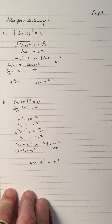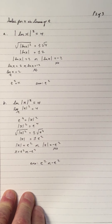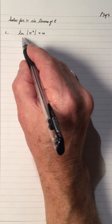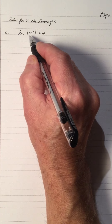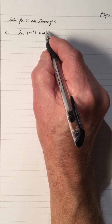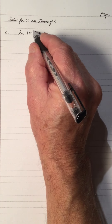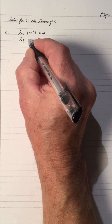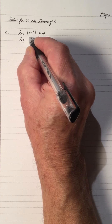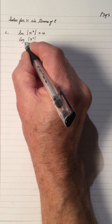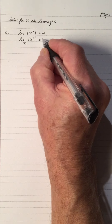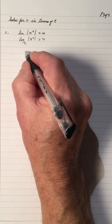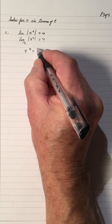Again, the equation is arranged differently — the square is in a different position. Now we have another one: ln|x²| equals four, where the square is inside the absolute value on the x. So this is log of |x²|, base e, equals four.